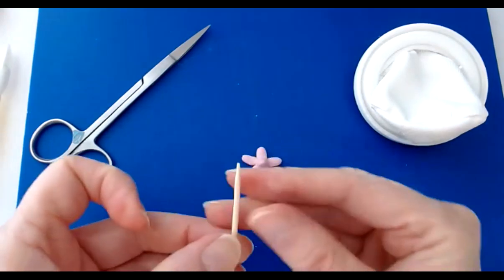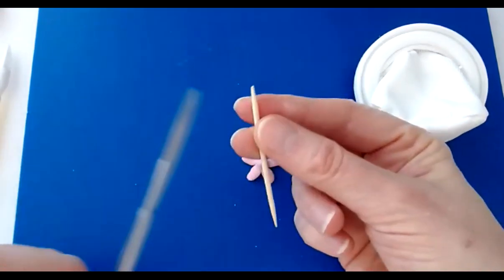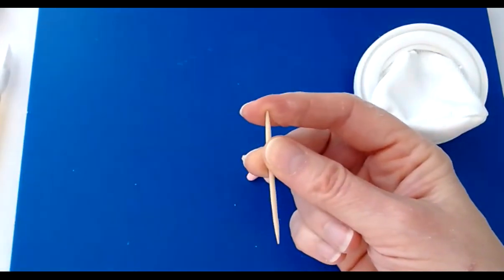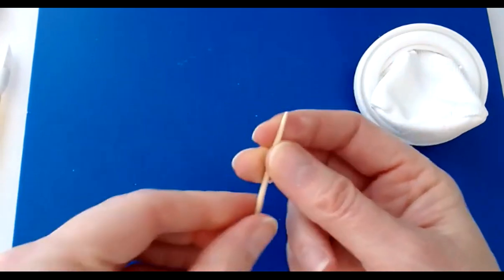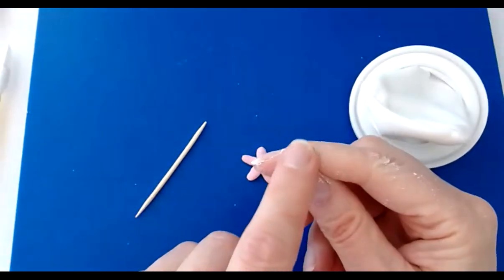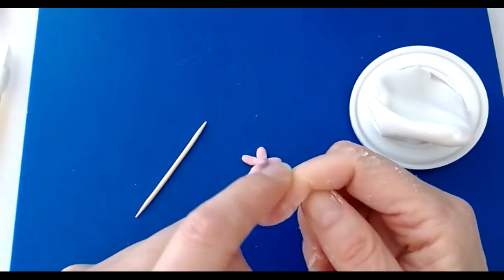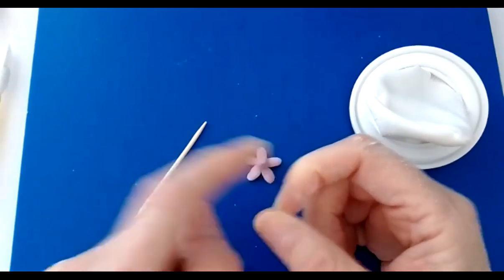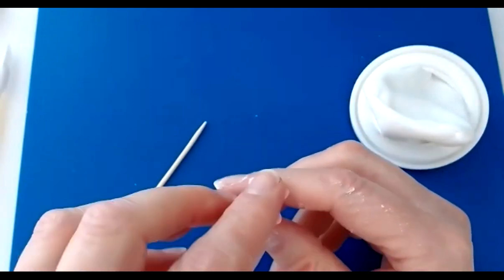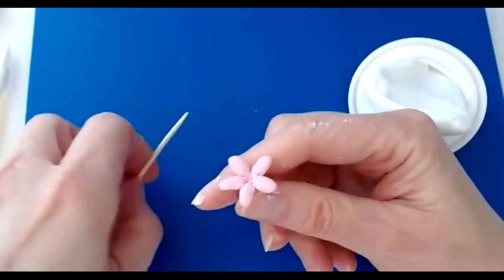What I'm going to use is a cocktail stick where I've taken just probably the top two millimeters off the point so that it doesn't poke into my shape. You want to rub your finger with cornflour. This part of your finger is where you're going to lay each petal, where it's bony and kind of your knuckle part.